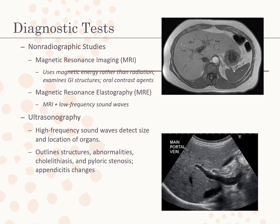Magnetic resonance elastography (MRE), developed by physicians at the Mayo Clinic, combines MRI with low-frequency shear waves. The resulting images enable physicians to ascertain the firmness of the liver, allowing them to better predict clients at risk for developing fibrous scar tissue and eventually cirrhosis. If detected early, treatment of the underlying cause can be initiated before the client develops cirrhosis, which is an irreversible and eventually fatal condition. Previously, physicians could only rely on inconclusive palpation or invasive liver biopsy. MRE shows great promise for other body parts such as breasts, muscles, and brain tissue.